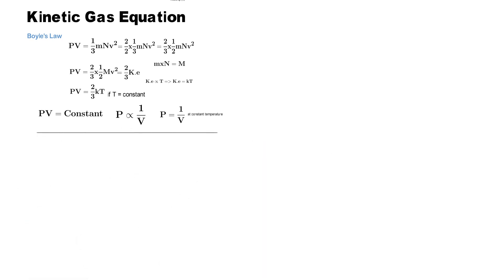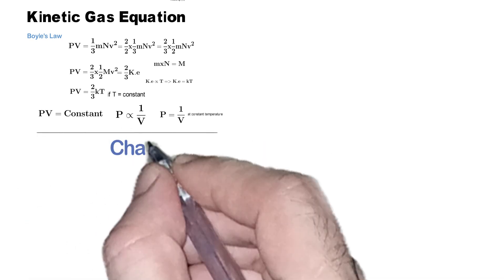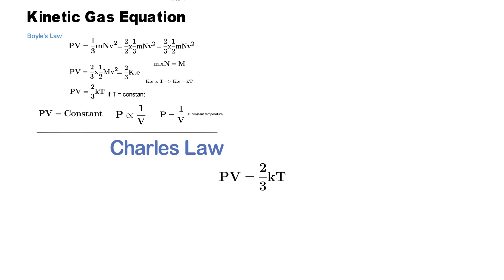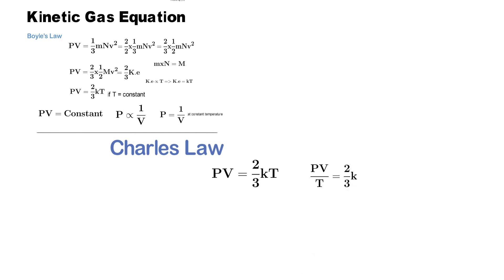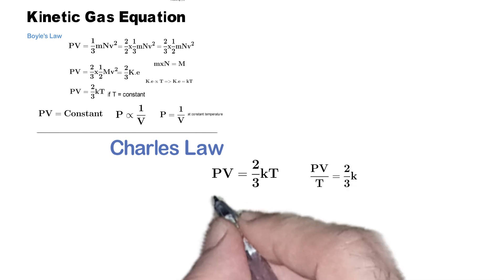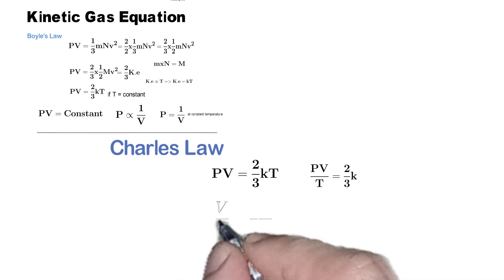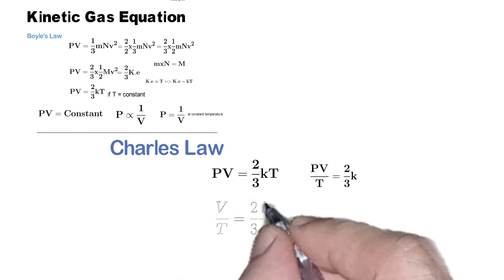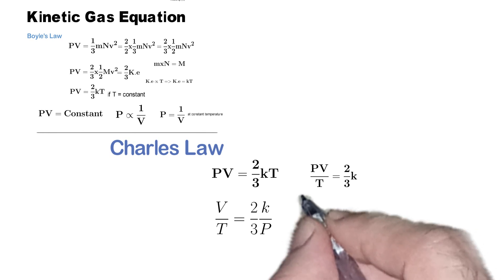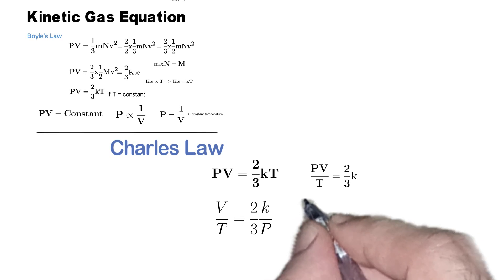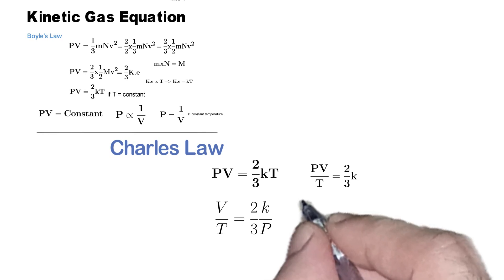Now let's derive Charles' law. We have derived that PV = 2/3 kT. Dividing both sides of this equation by T, we get PV/T = 2/3 × k. Now dividing both sides by P, we get V/T = (2/3)(k/P), where V is the volume, T is the temperature, k is constant, and P is the pressure.